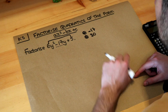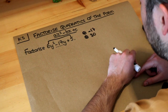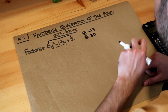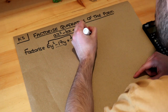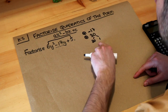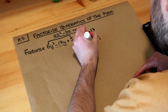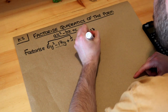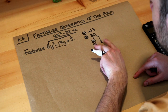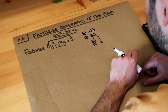Now what two numbers add to give minus 17 and multiply to give 30? Let's think about factor pairs of 30. It could be 30 and 1, but do they add or subtract in any way to make minus 17? No. What about 15 and 2? 15 times 2 is 30 — and 15 and 2 seem to combine in some way to make minus 17.